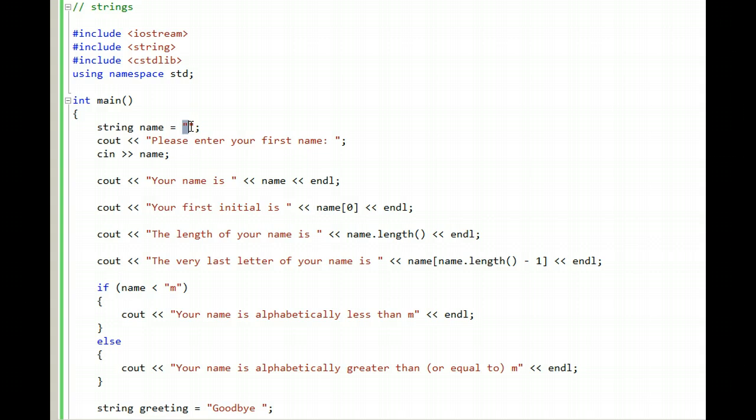Instead of setting it equal to zero, we set it equal to null string, also known as empty string - two quotes typed next to each other. This program allows me to enter my name and then it prints out my name.